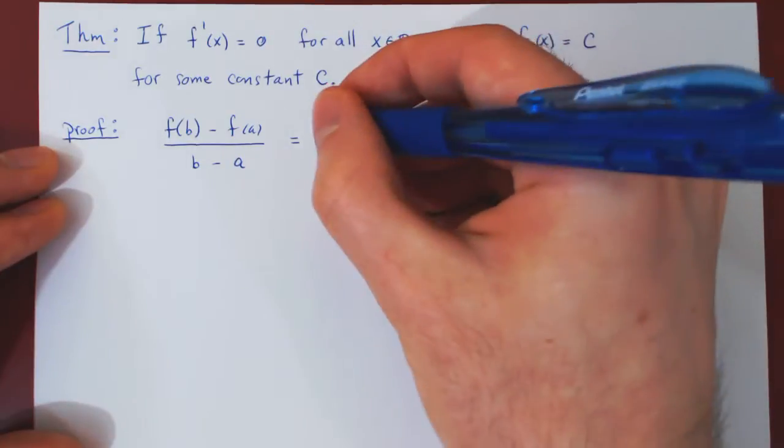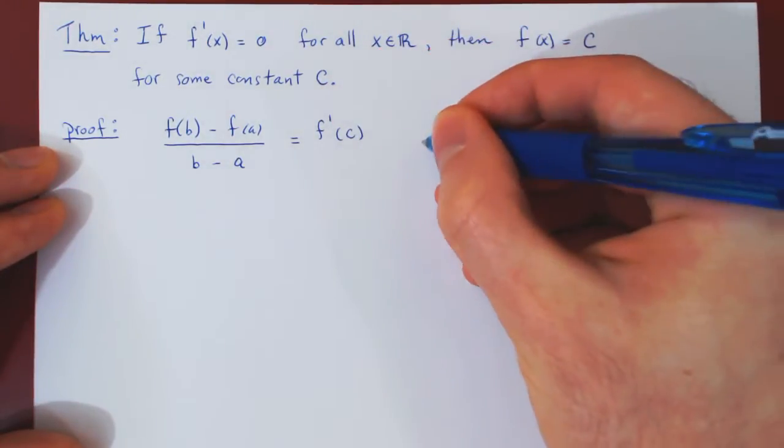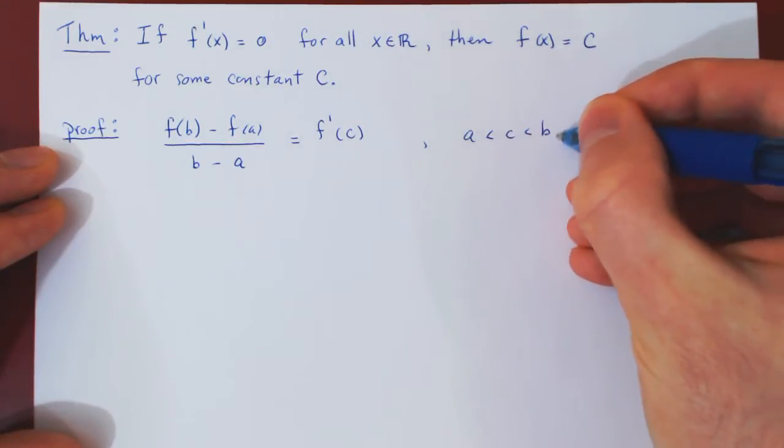the average slope of the function f on the interval from a to b will be equal to the instantaneous slope of the function, therefore the derivative, at some point c. So c lies somewhere between a and b.